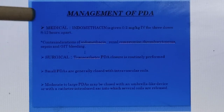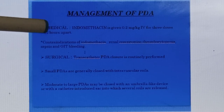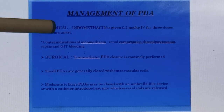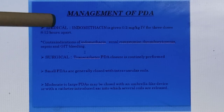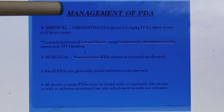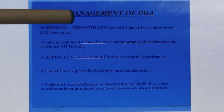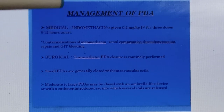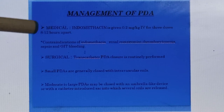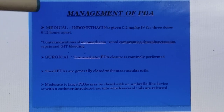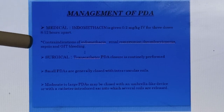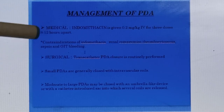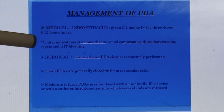Medical management includes indomethacin or ibuprofen — these are NSAID drugs. It should be given especially in low birth weight infants at 0.2 mg per kg IV for three doses, 8 to 12 hours apart. Contraindications of indomethacin include renal compromise, thrombocytopenia, sepsis, and GIT or renal bleeding, and should be avoided in these patients.